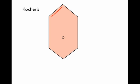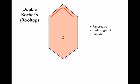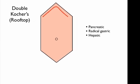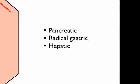The next is the double Kocher's incision, which is also commonly referred to as the rooftop incision. This is essentially two Kocher's which have been joined up in the midline. This offers adequate exposure to the pancreas for significant pancreatic resections, an example being a Whipple's procedure. It also allows access for radical gastric operations and hepatic operations, such as hemihepatectomies or metastectomies.